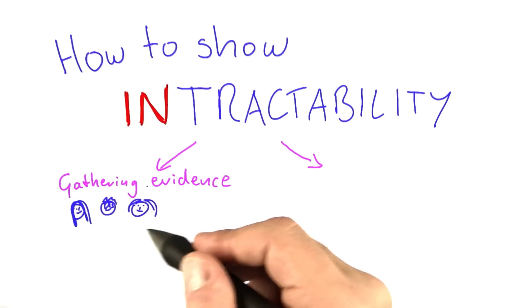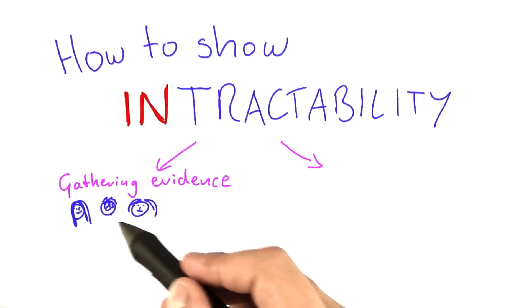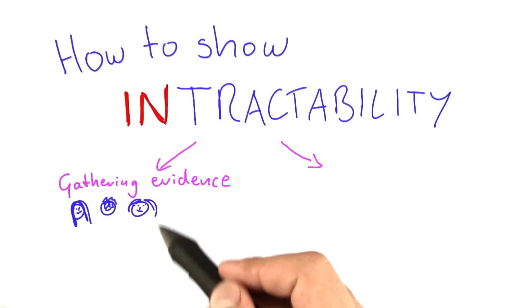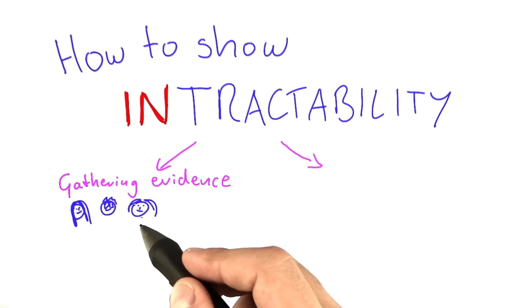And what I mean by gathering evidence is this. We've already found out that Alice, Bob, and Carol were working on problems for which they weren't able to find a polynomial time algorithm, but all of their problems were connected. So if one of them managed to find a solution, then all of their problems would be tractable.